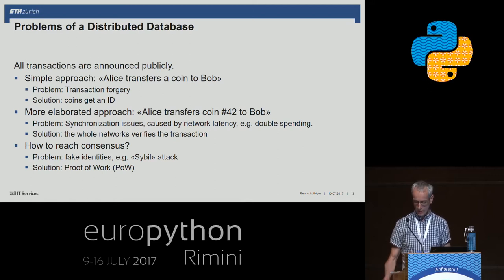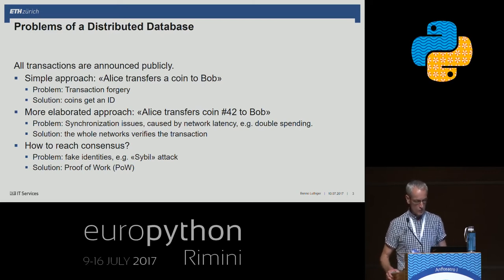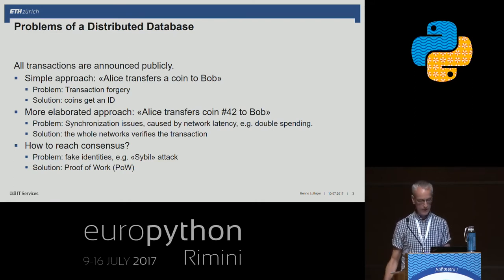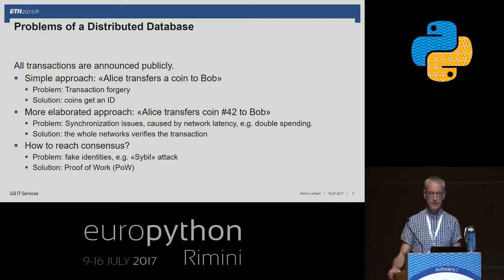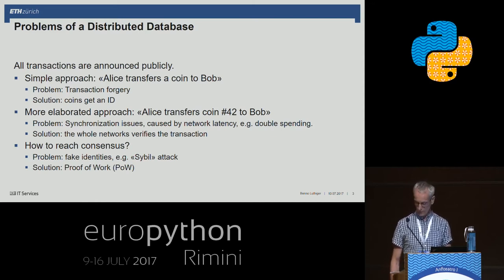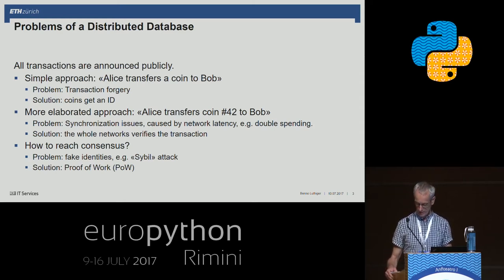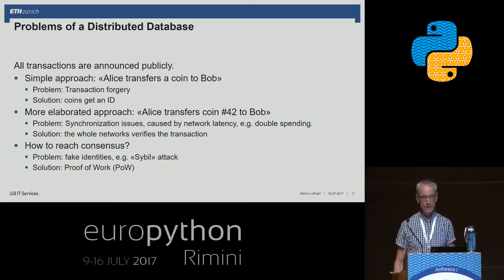To work around the double spending problem, we let the whole network verify the legitimacy of a transaction. But with such a solution we come to the last problem: it's called a Sybil attack. An attacker can install false identities, and if enough false identities are installed, the attacker will be able to double spend the transaction. So the solution is to make the creation of false identities expensive.